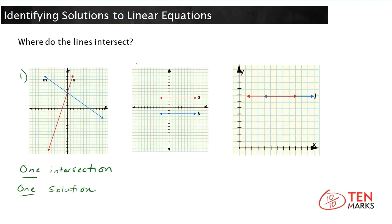Now let's look at the second example. Again, you have two lines from a system of equations. You have line A in red and line blue. These two lines are parallel and they will never intersect. If the lines never intersect, there is no solution.